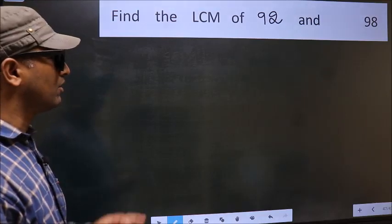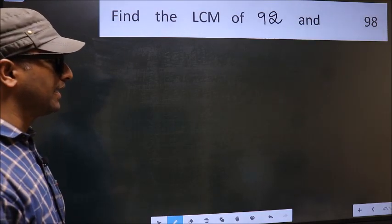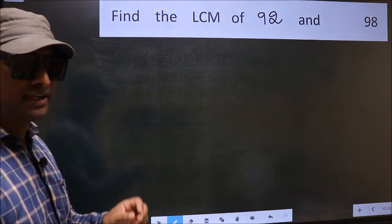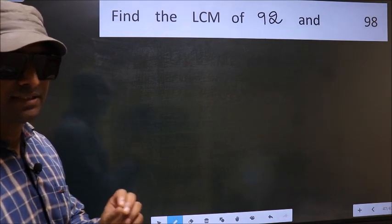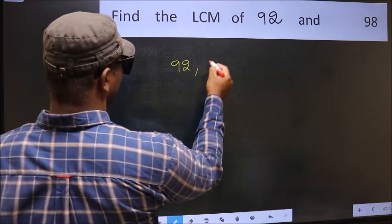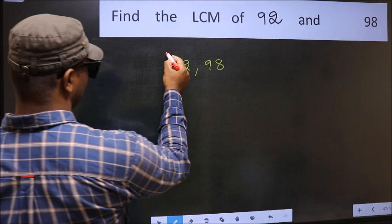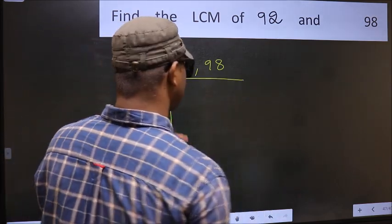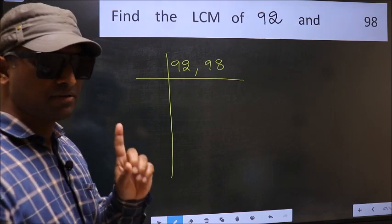Find the LCM of 92 and 98. To find the LCM for that, we should frame it in this way: 92, 98. This is your step 1.